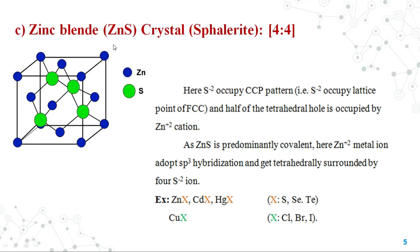The third type is zinc blende structure, also called sphalerite structure. In this structure, the sulfide ion (S2-) occupies the CCP pattern, that is the cubic close packing, meaning it occupies at the FCC position — the corners of the cube and the center of each face. Half of the tetrahedral voids are occupied by Zn2+ ions.